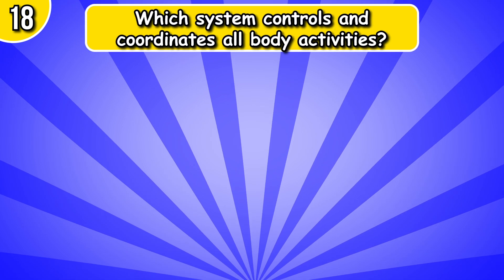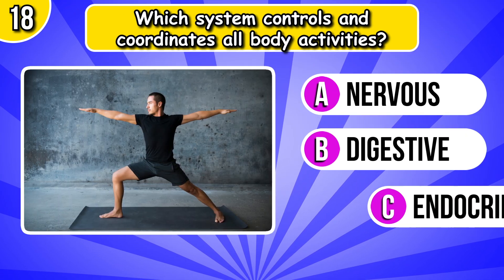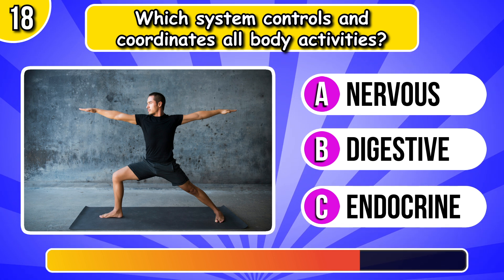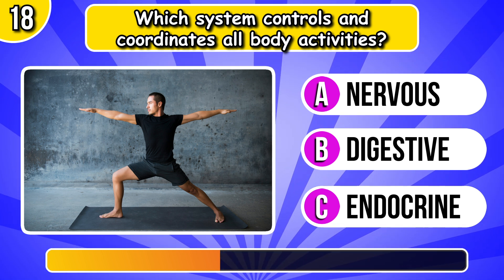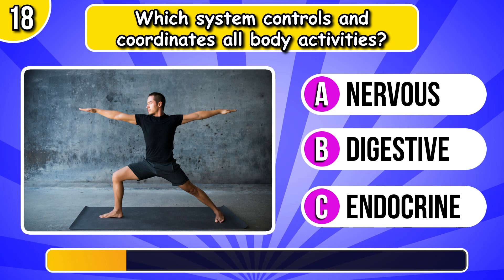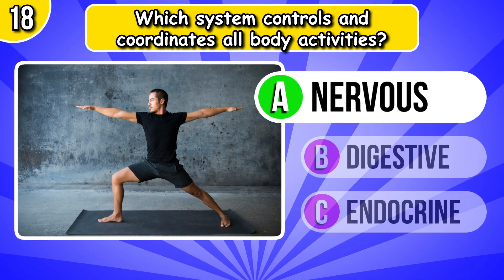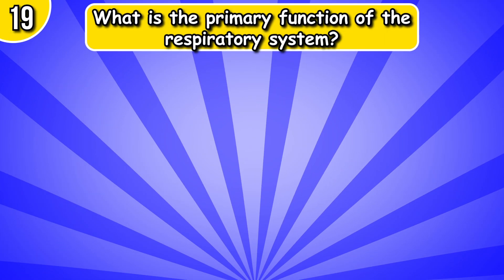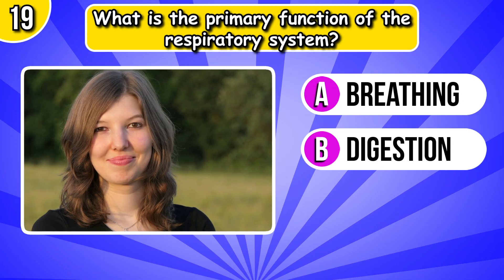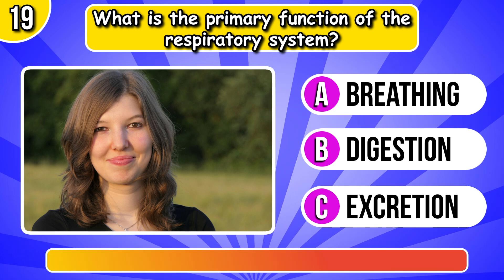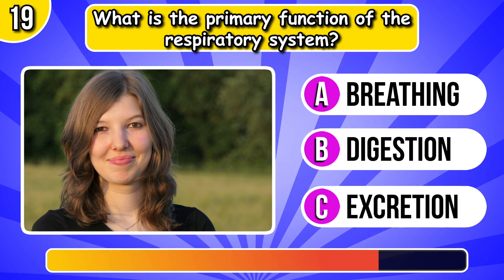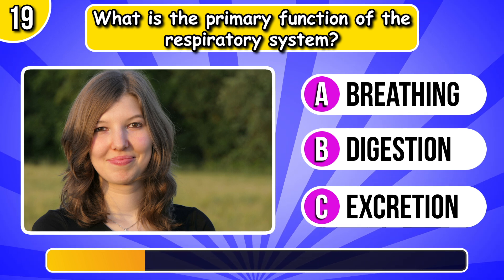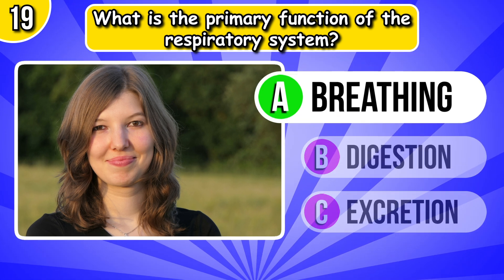Which system controls and coordinates all body activities? It's nervous system. What is the primary function of the respiratory system? It's breathing.